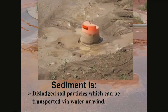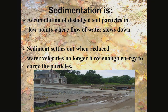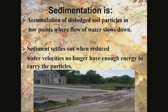Here's an example of sediment that has been deposited around a traffic cone. The third step in the process, sedimentation, is an accumulation of dislodged soil particles at low points where the flow of water slows down. Sediment settles out when you have reduced water velocities that no longer have enough energy to carry the particles — typically a low spot in the street, a low spot in a stream, or a slowing of the water flow.